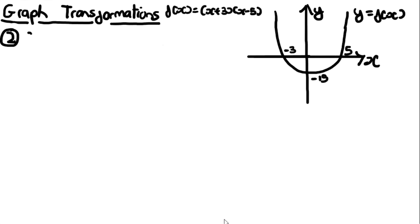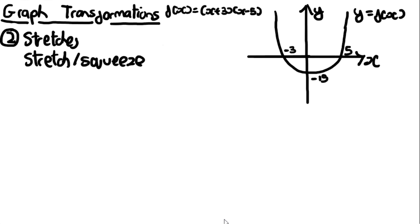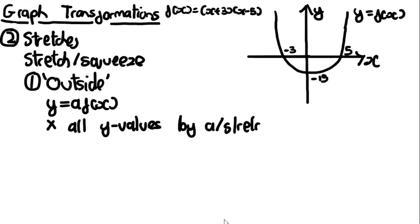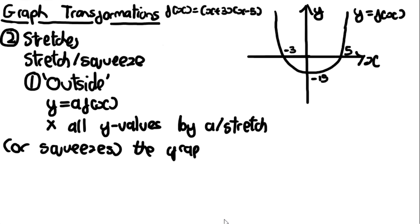The second type of transformations are stretches, where the graph is stretched or squeezed by a set factor. There are two types: outside and inside the function. Outside the function is of the form y = af(x), where a is a constant. The effect is it multiplies all y values by a. It stretches or squeezes the graph along the y-axis, if a is less than zero, by a factor of a.